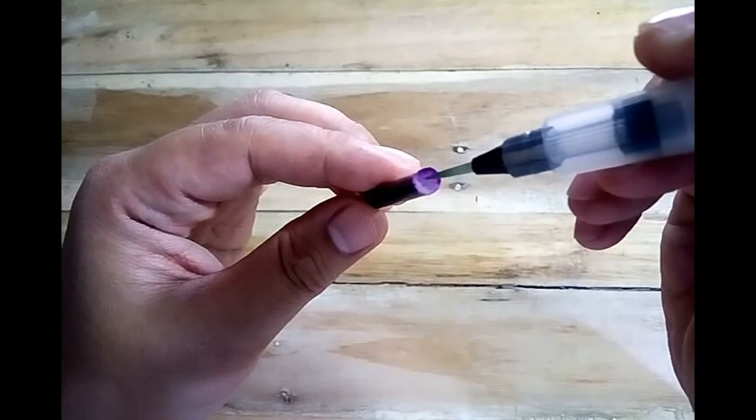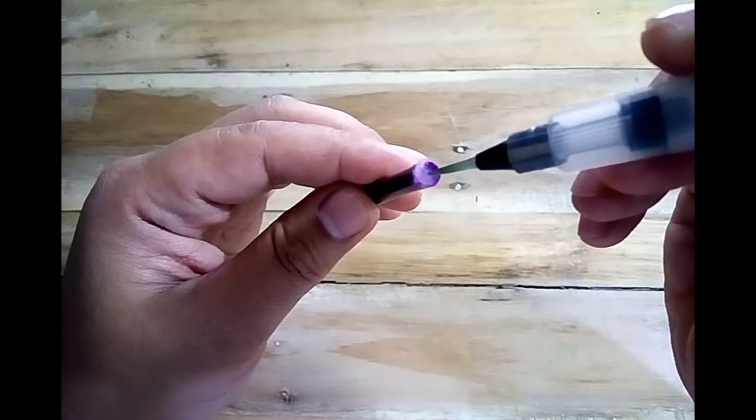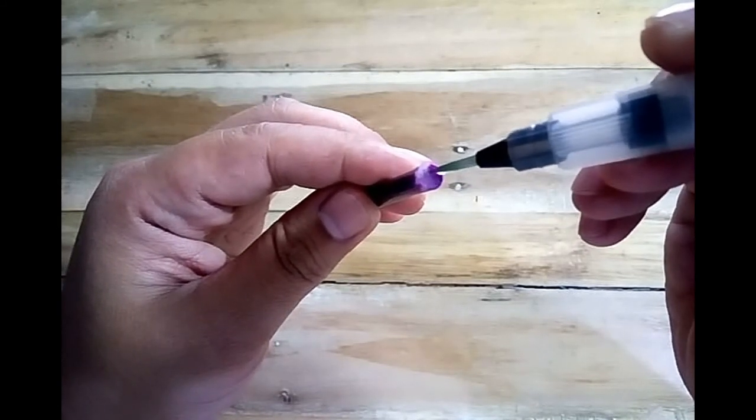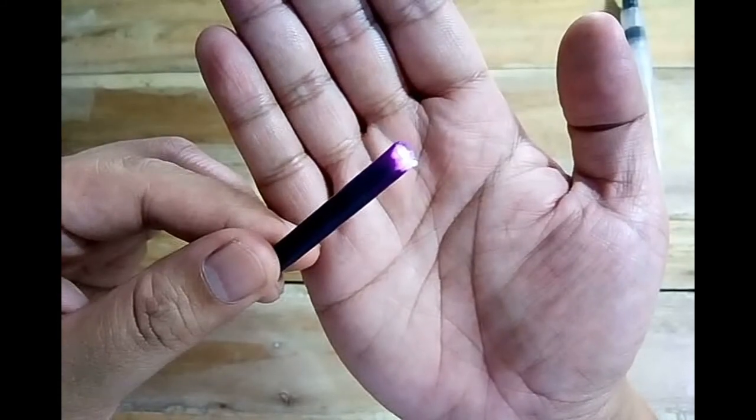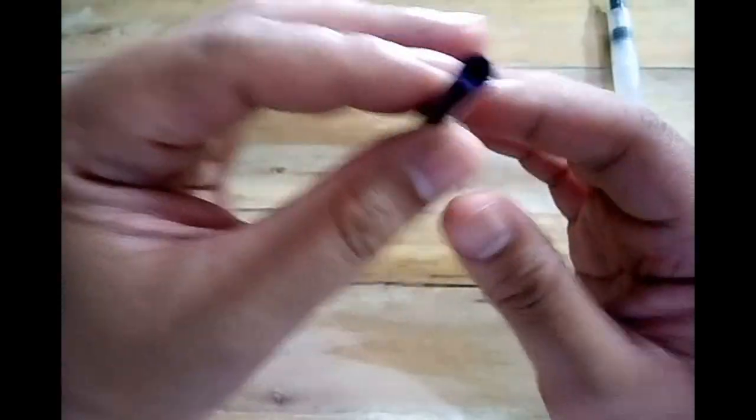And in here you'll notice that the part where you drop the water becomes white. That's when you know that the water is rehydrating the cartridge and pushing the remaining ink to the other end.